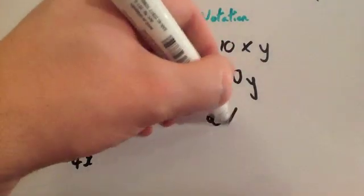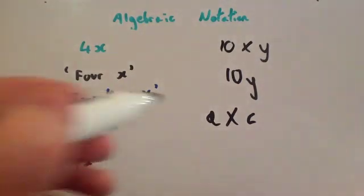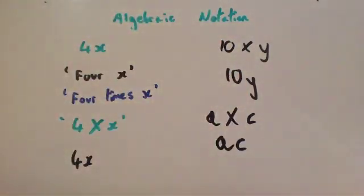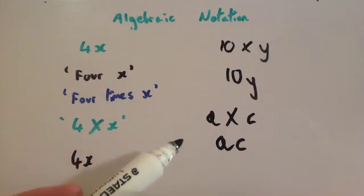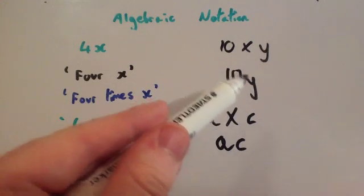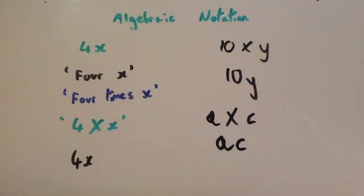For instance, if I wanted to do 10 times y, in algebra you don't write this multiplication sign, you just write 10y. Or if you wanted to do a times c in algebra, you don't write the multiplication sign, you just write ac. So everyone knows that if you've got ac beside each other in maths, that would mean a times c. If you had 10y beside each other, it means 10 times y. If you had 4x, it means 4 times x. The main thing to take away from this is that you don't write the multiplication sign in algebra, and if you've got a number directly beside a letter, it means that number times the letter.